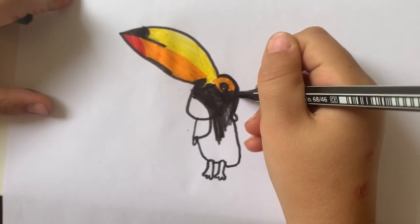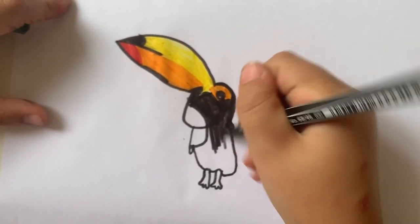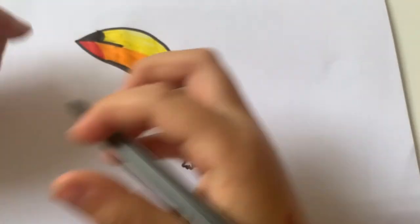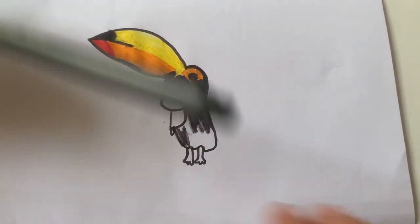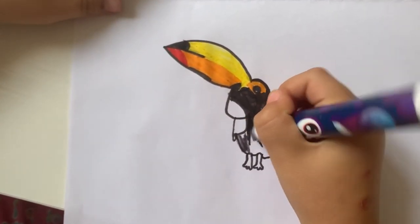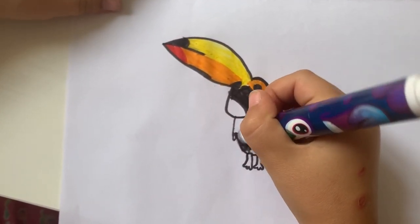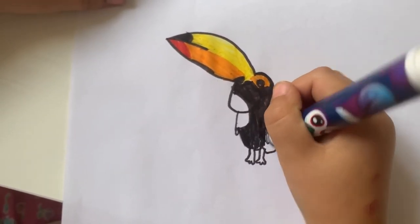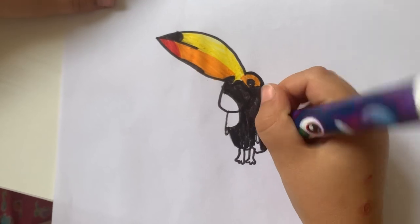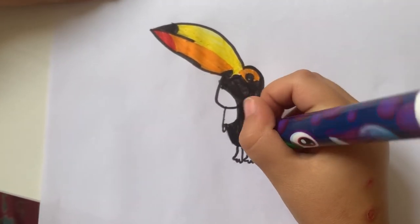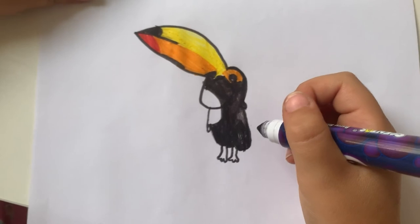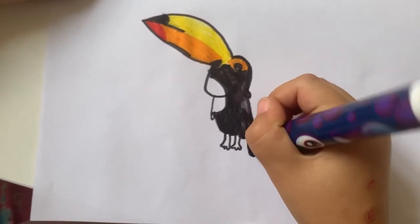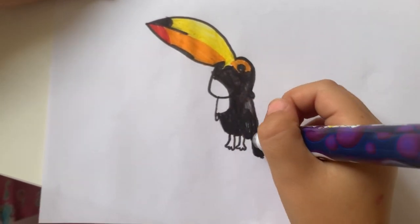And color the outside black. I think I'm going to go for another black, so color. Just went for a new black because that black is finishing. Because we don't have gray with us, we can make the feet black as well and make a long tail there.